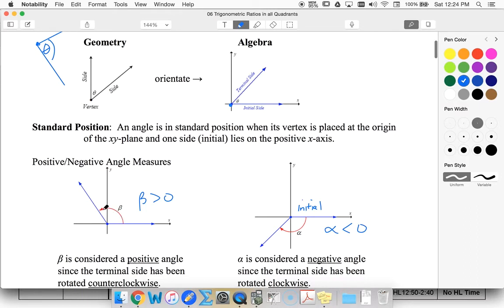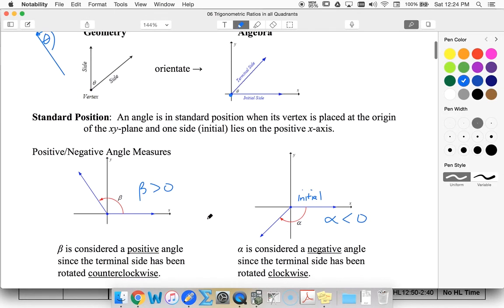So going counterclockwise is how we define a positive angle. If we're going to define a negative angle, we still start with our initial arm on the x-axis, and then we go clockwise or down towards the negative y-axis, down or past. And there our theta or our alpha, whatever we choose to call our angle, is defined to be negative.